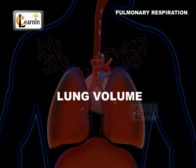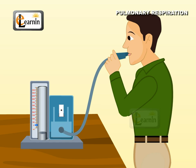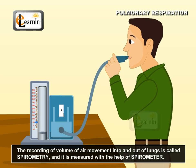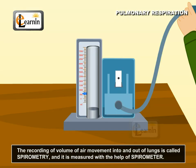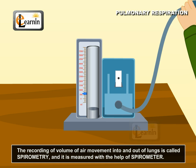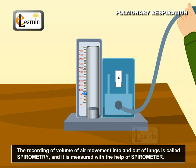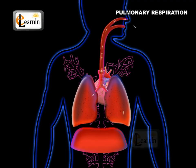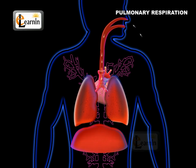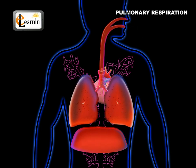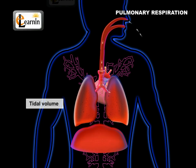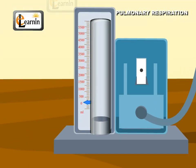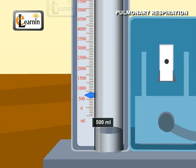Lung volume. The recording of volume of air movement into and out of the lungs is called spirometry, and is measured with the help of the spirometer. The volume of air an animal inhales and exhales with each breath is called tidal volume. It averages about 500 mL in humans.